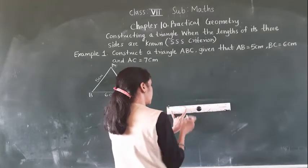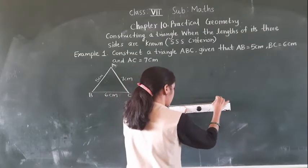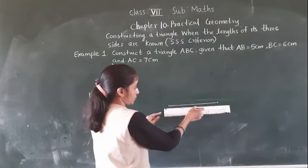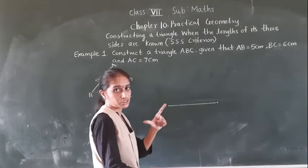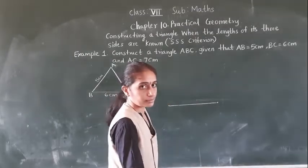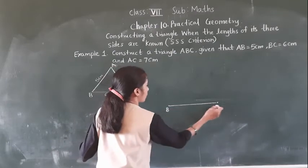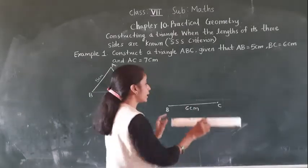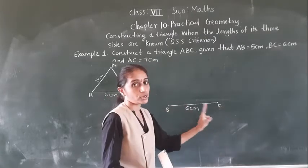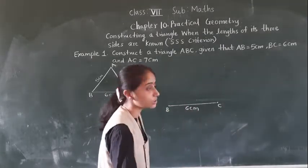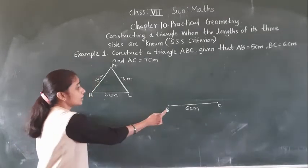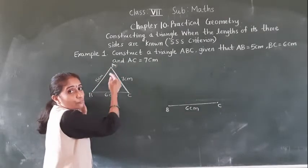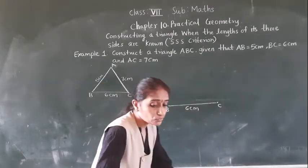Here I am going to mark 6 cm. BC — mark 6 cm. Now here B and here C. Now AB — how much is the measurement of AB? AB is 5 cm. So what are we going to do? We are going to use the compass to draw the 5 cm measurement.